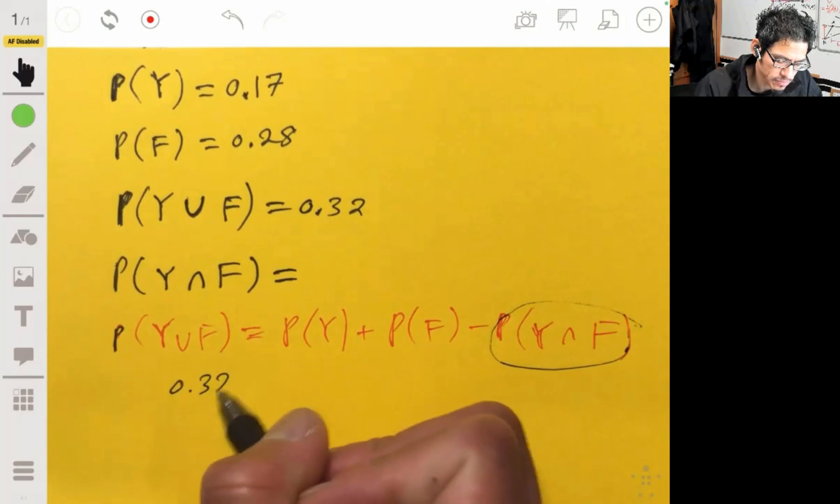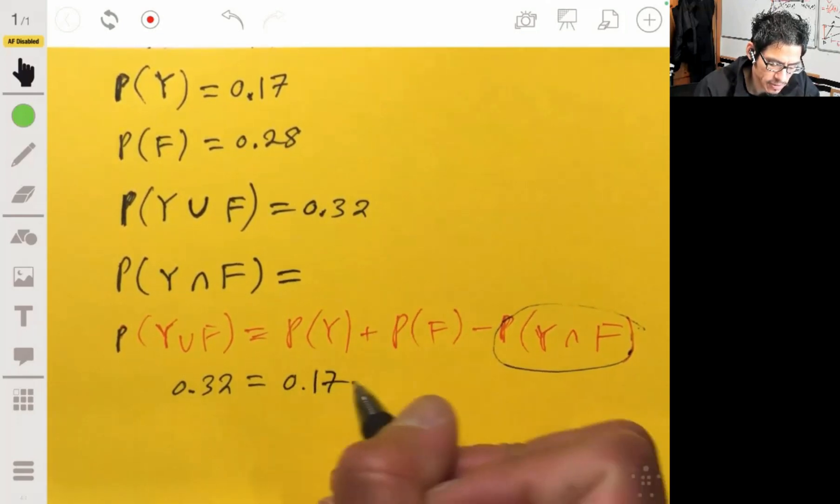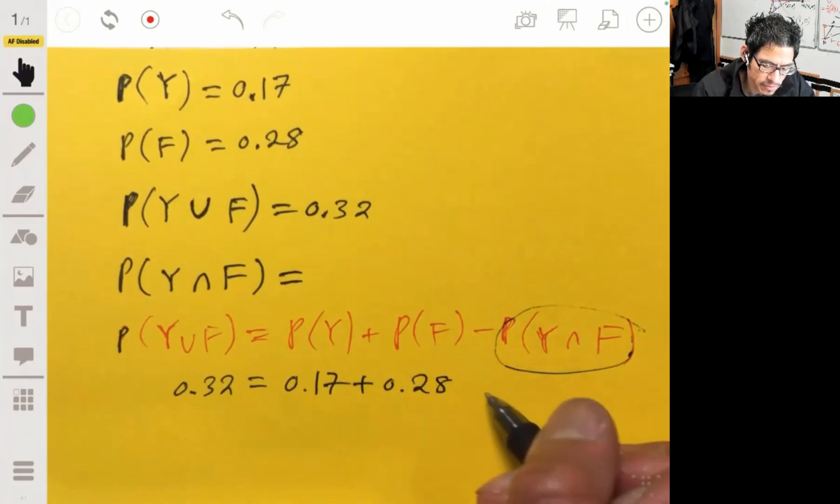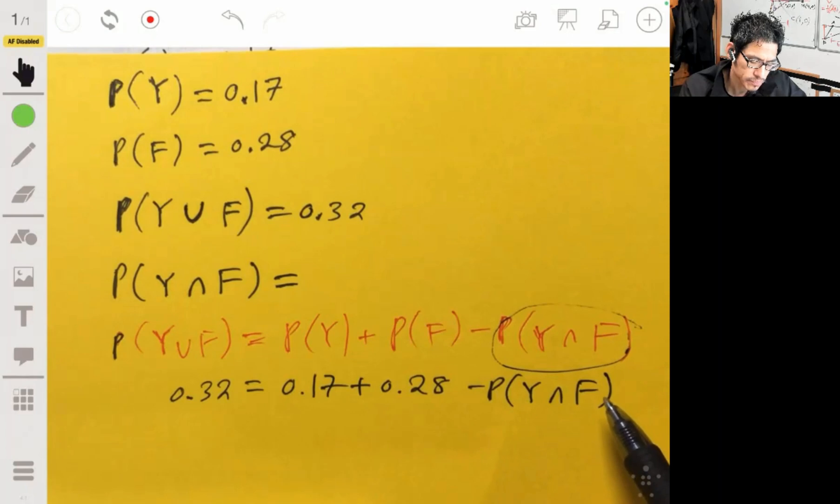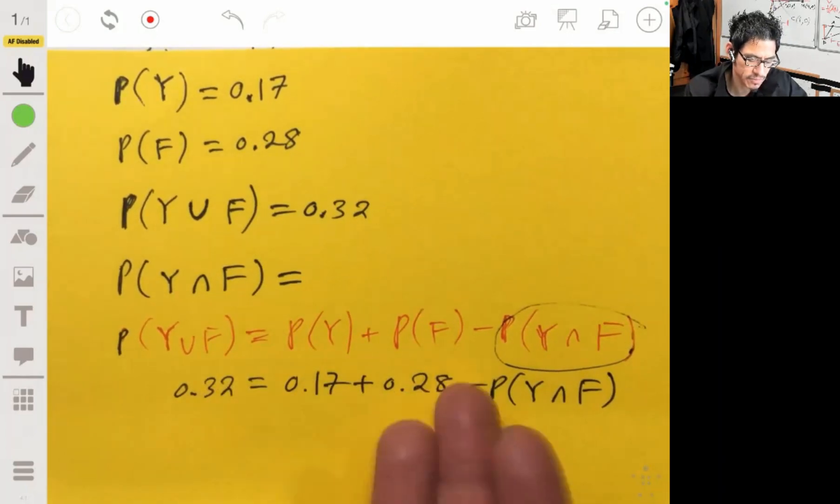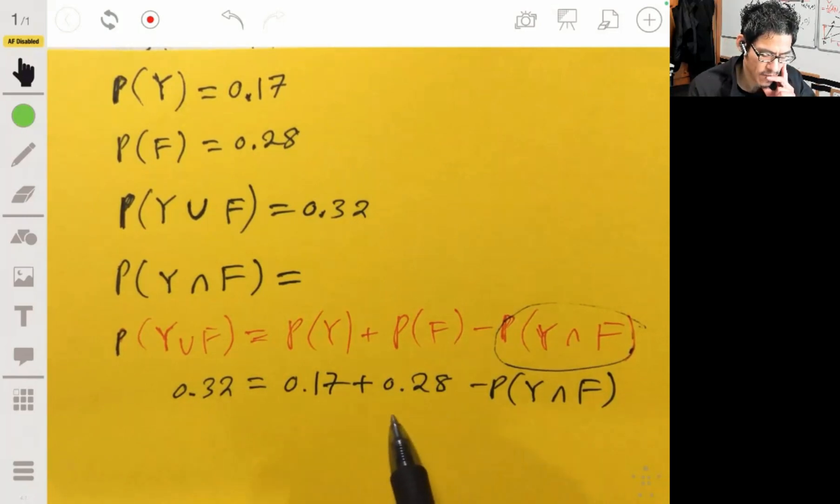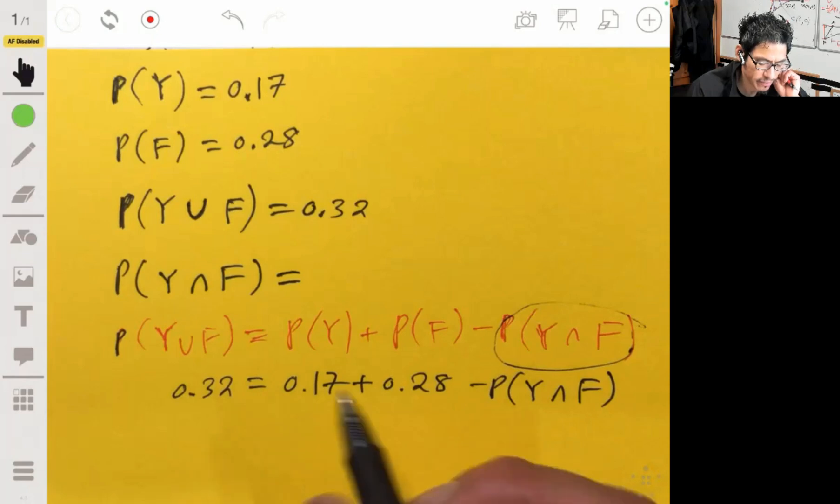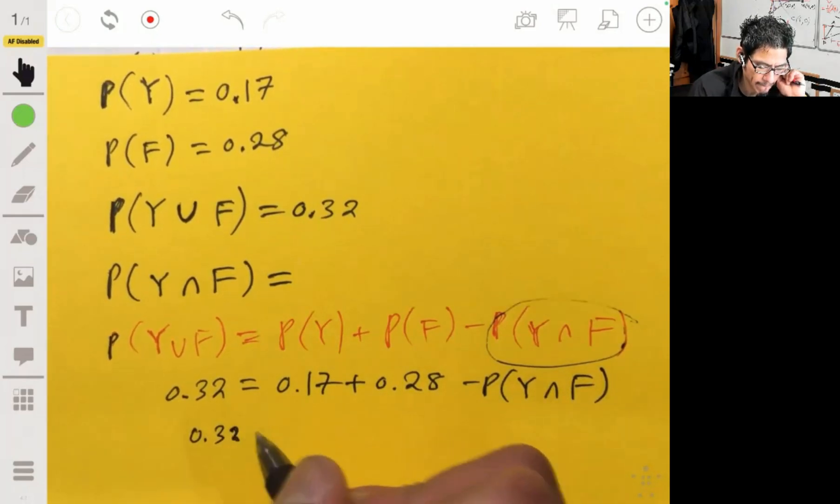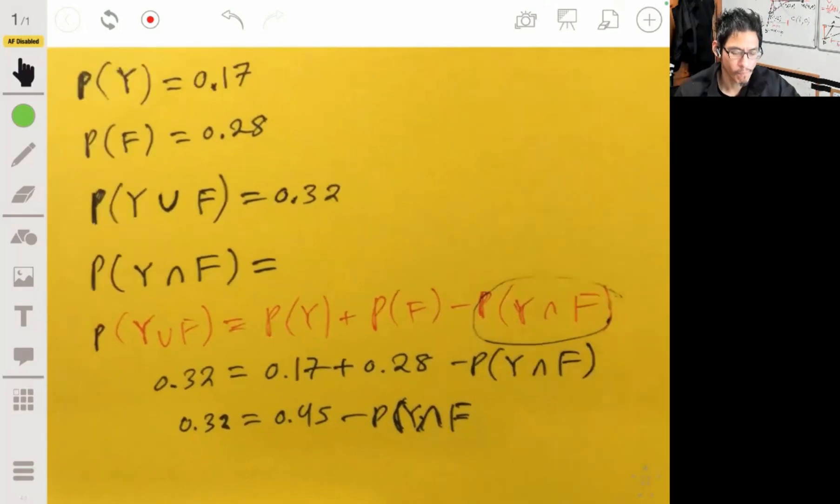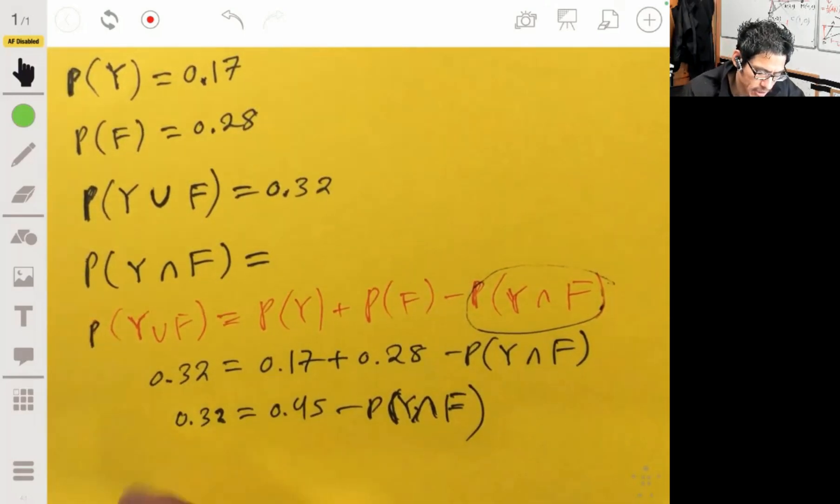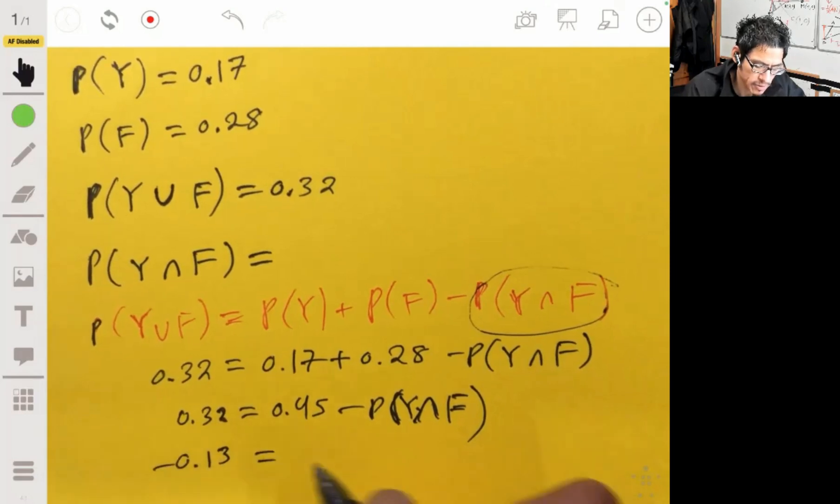So, replacing the left with 0.32, that would be 0.17, this would be 0.28, minus the probability of Y intersect F. So we can then subtract this from the left. We would get 0.17 minus that. So we get 35, 45, so we get, I'll just write out the work. 0.45 minus the probability of Y intersect F.